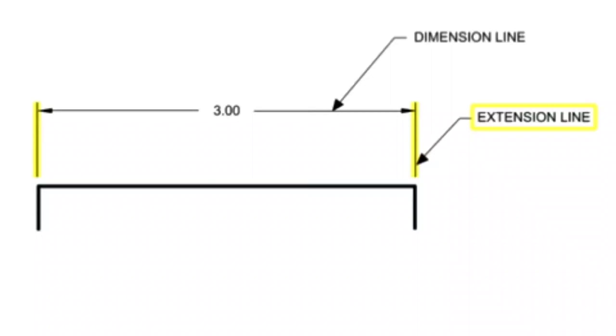Extension lines are used to indicate the extension of a surface, or to point to a location outside the part outline. They start with a short, visible gap from the outline of the part, and are usually perpendicular to their associated dimension lines. They help illustrate how far a dimension extends.